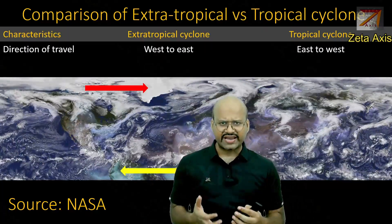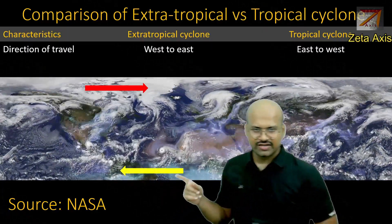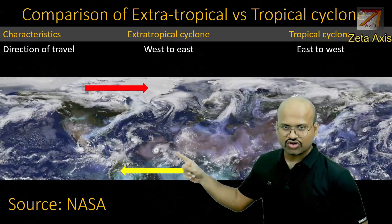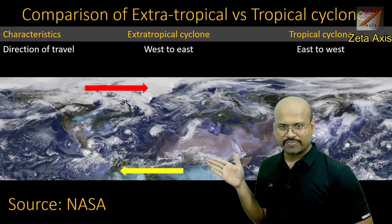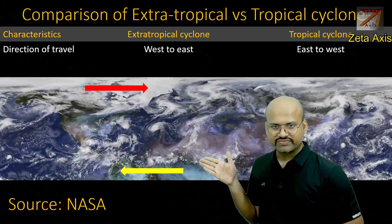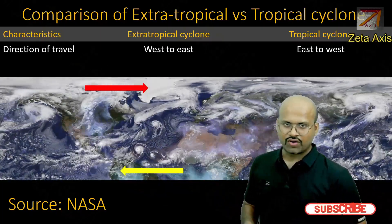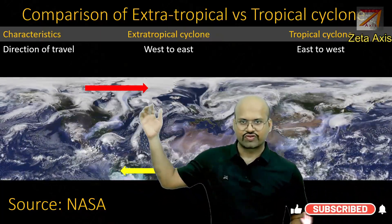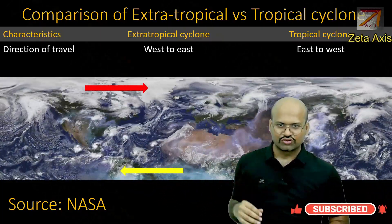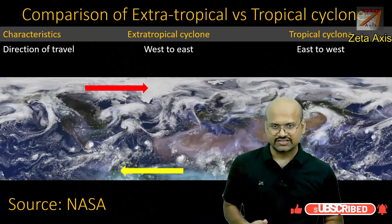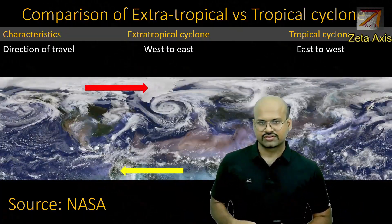Next is the direction of movement. Extratropical cyclones have a more or less east-to-west movement, while tropical cyclones move from west toward east. We can clearly see the difference in the movement direction of both of these cyclones.